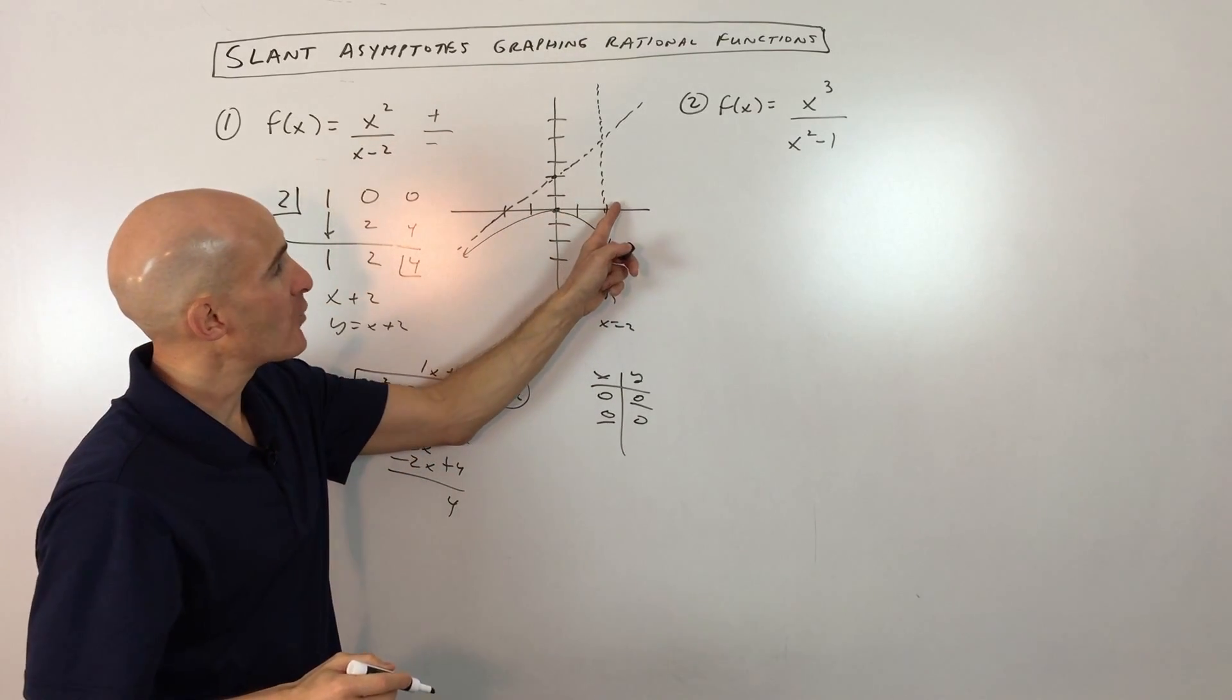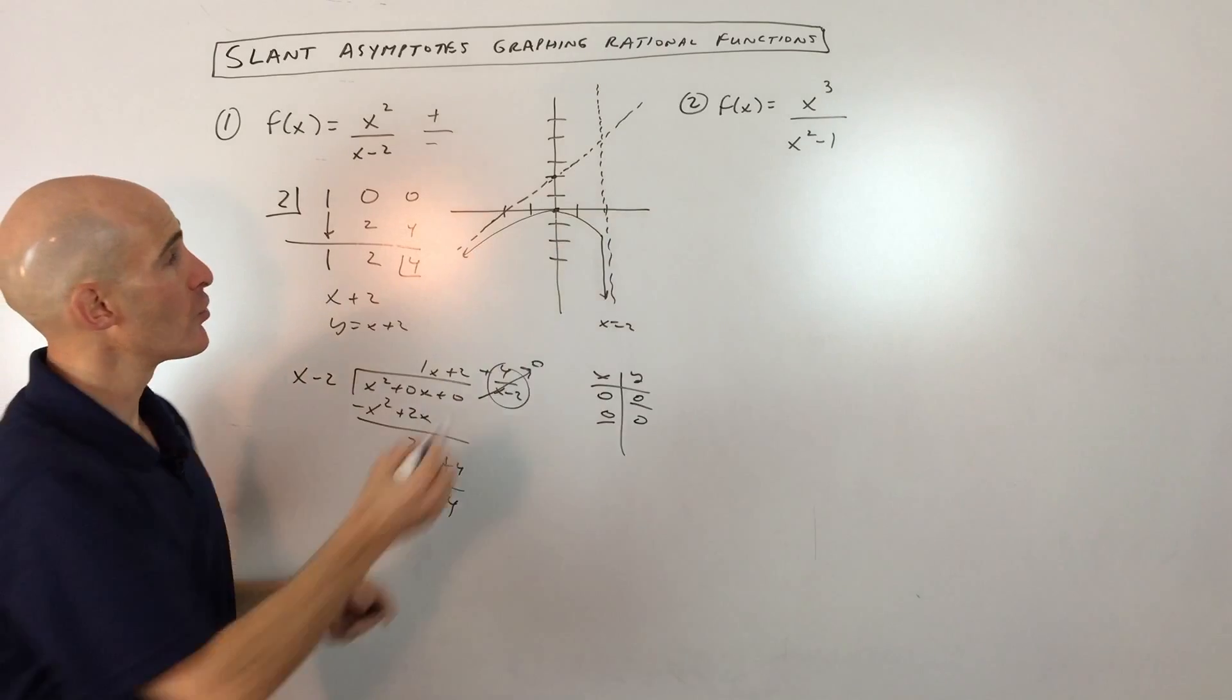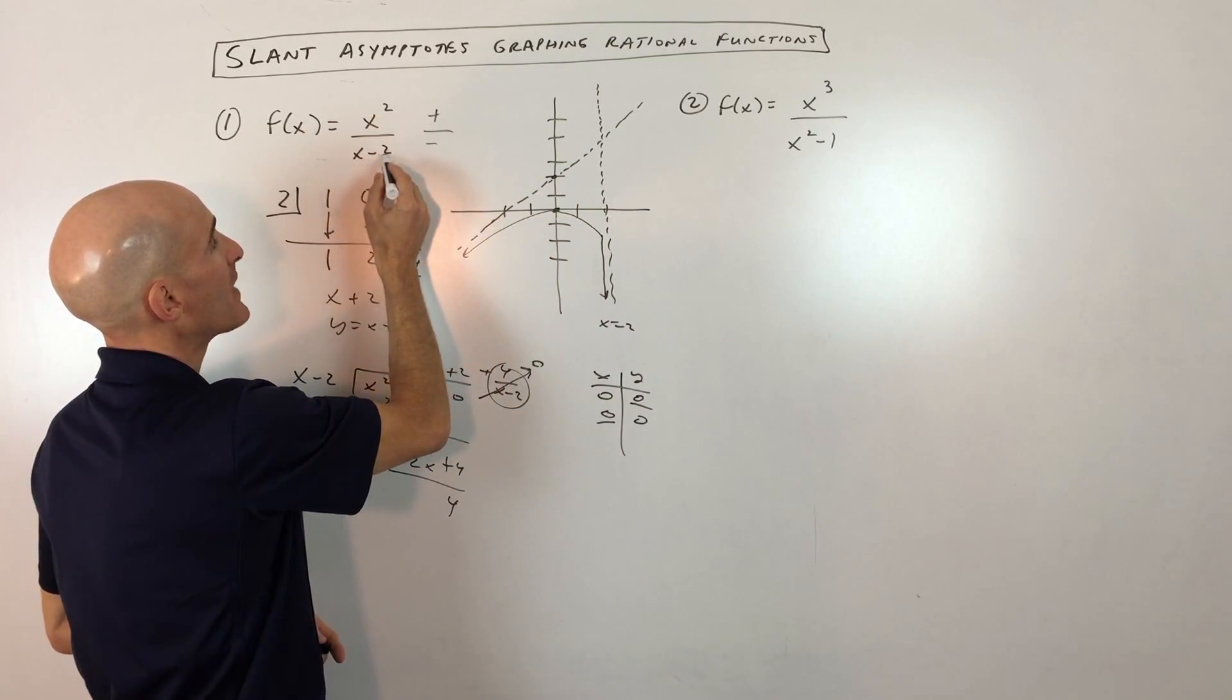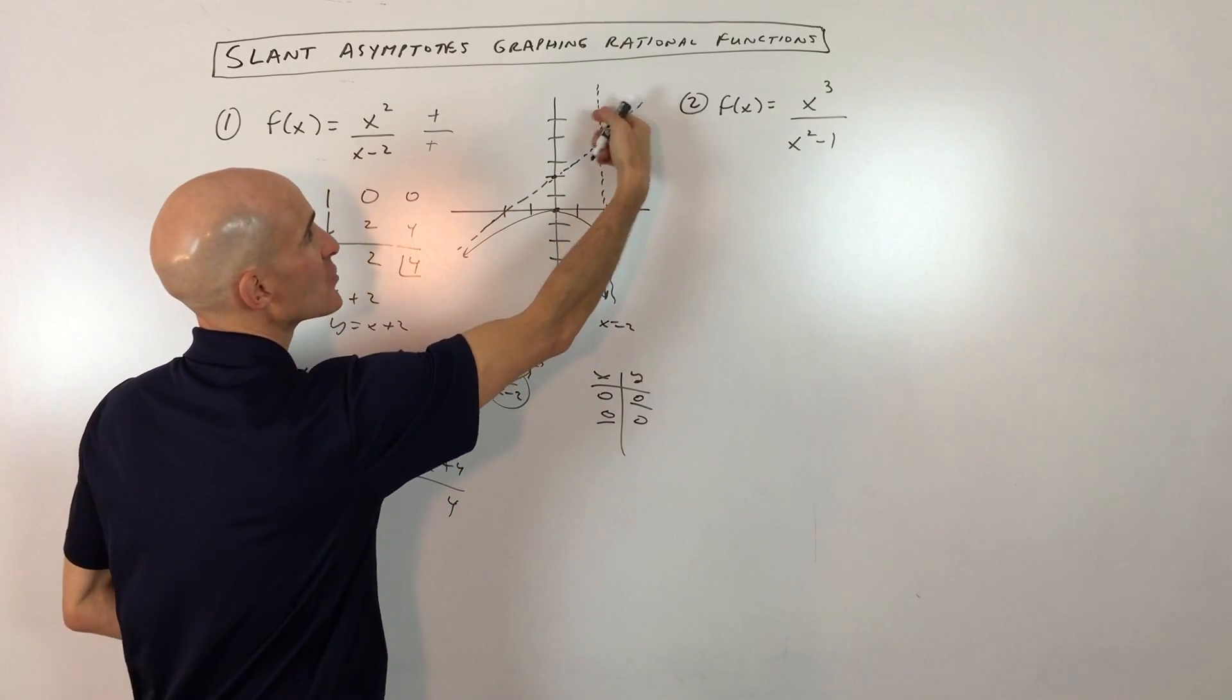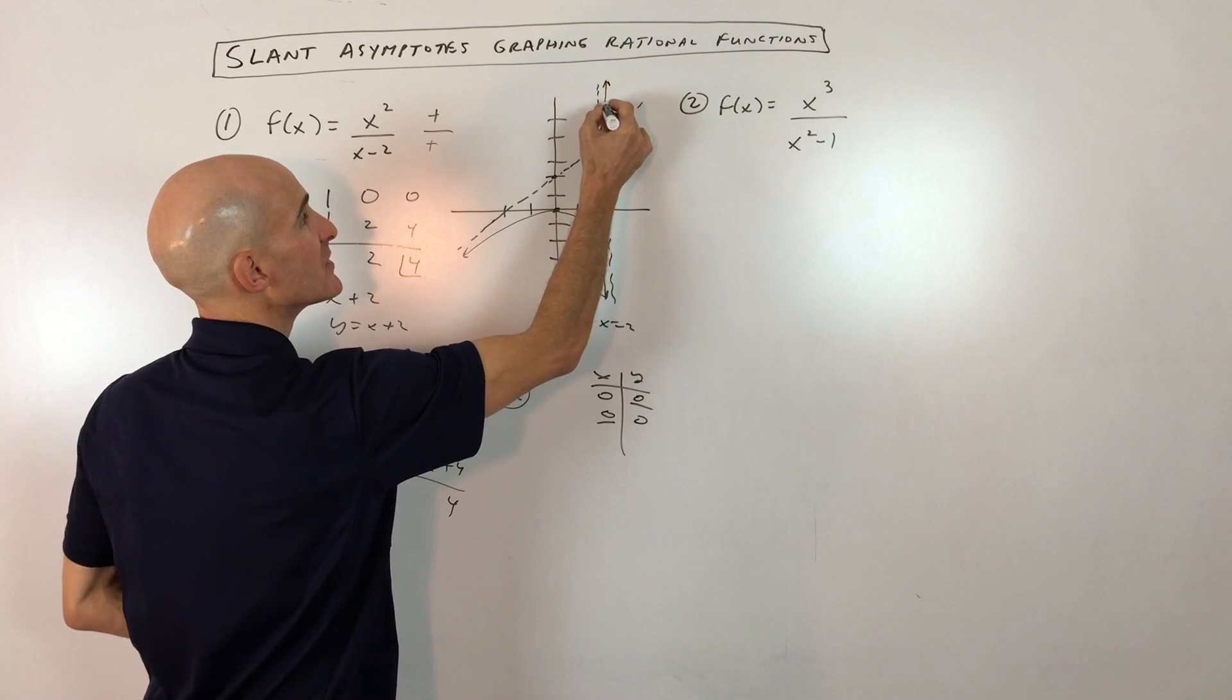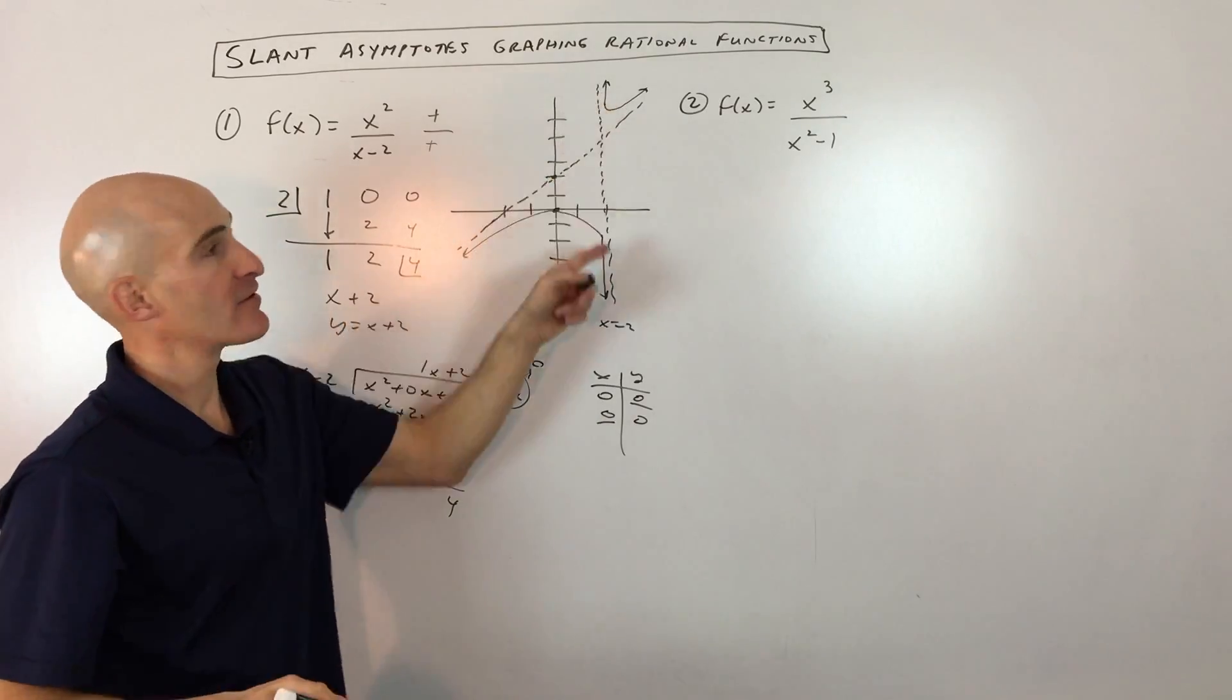Now I'm going to pick a point over here on this side, maybe positive 2.1. I just pick a point a little bit greater than 2, to the right of 2. If we do that, we get 2.1 squared, which is positive. 2.1 minus 2 is 0.1, which is positive. And a positive divided by a positive is a positive. So as you're approaching this vertical asymptote from this side, you can see it's going up to positive infinity. So this graph is going to look something like that. So there's your graph. You can see it's going to look something like that.